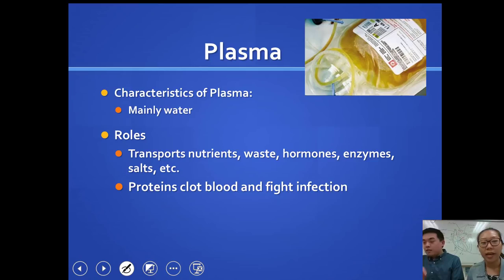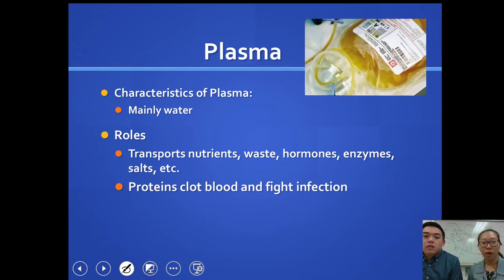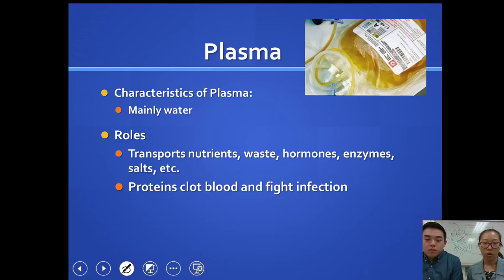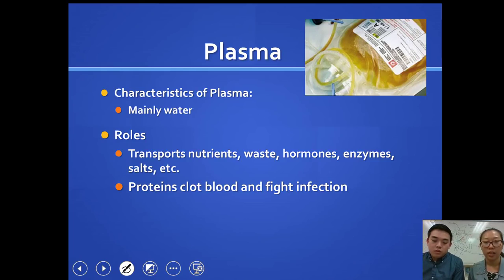The plasma, which makes up about 55% of blood, is mainly water. Its role is to transport nutrients, waste, hormones, enzymes, salts, and other things. The plasma also has proteins that help aid in clotting blood and in fighting infections.